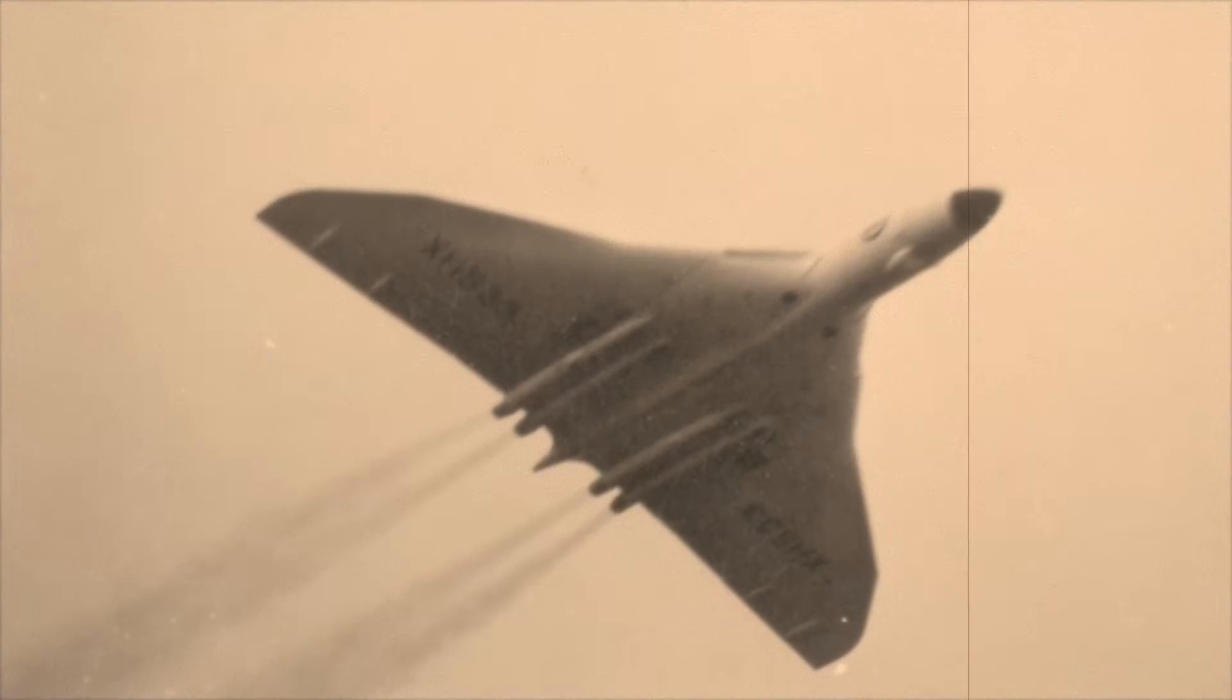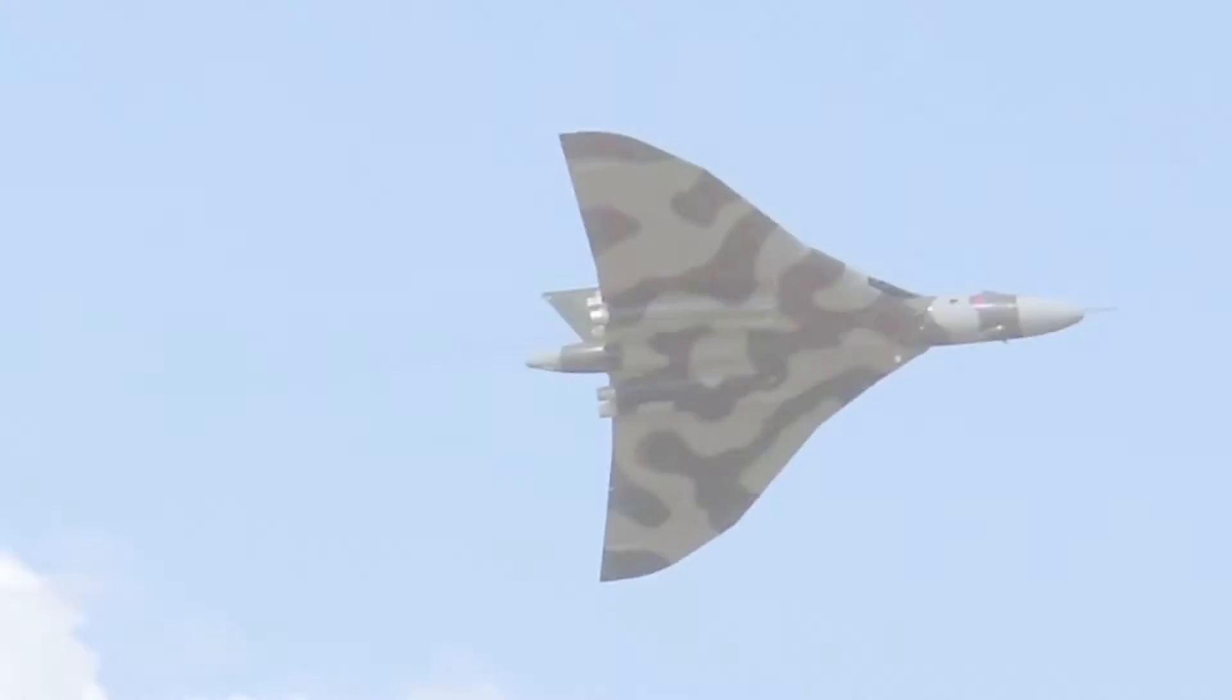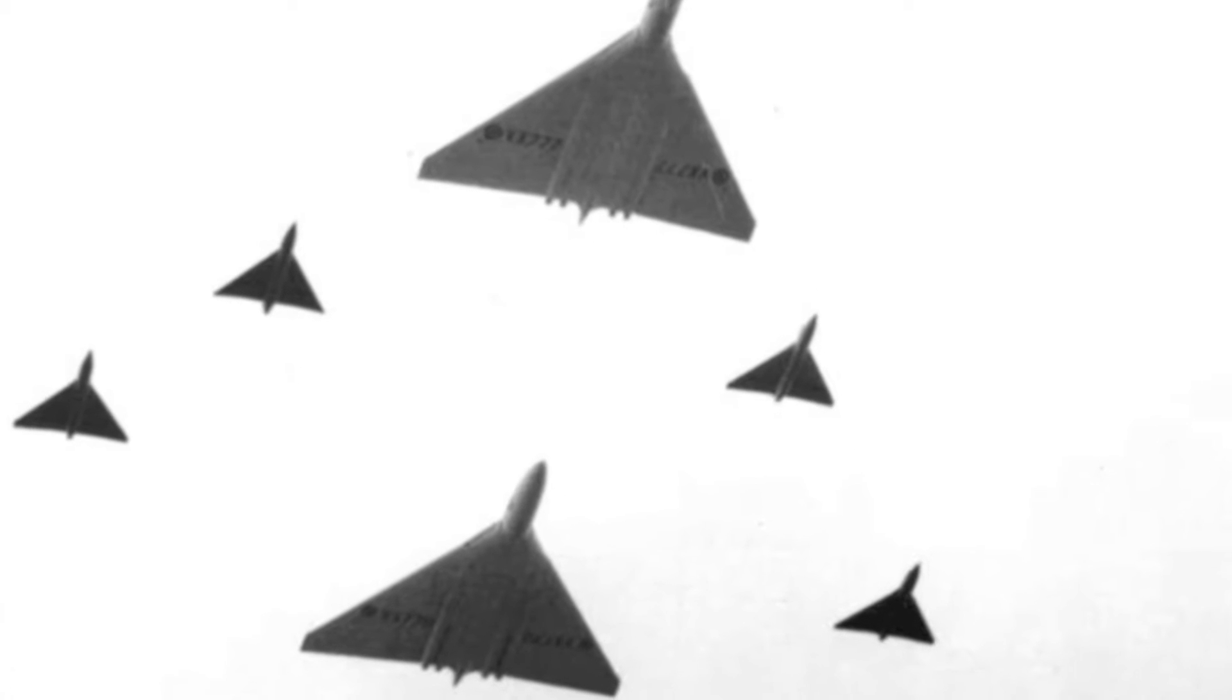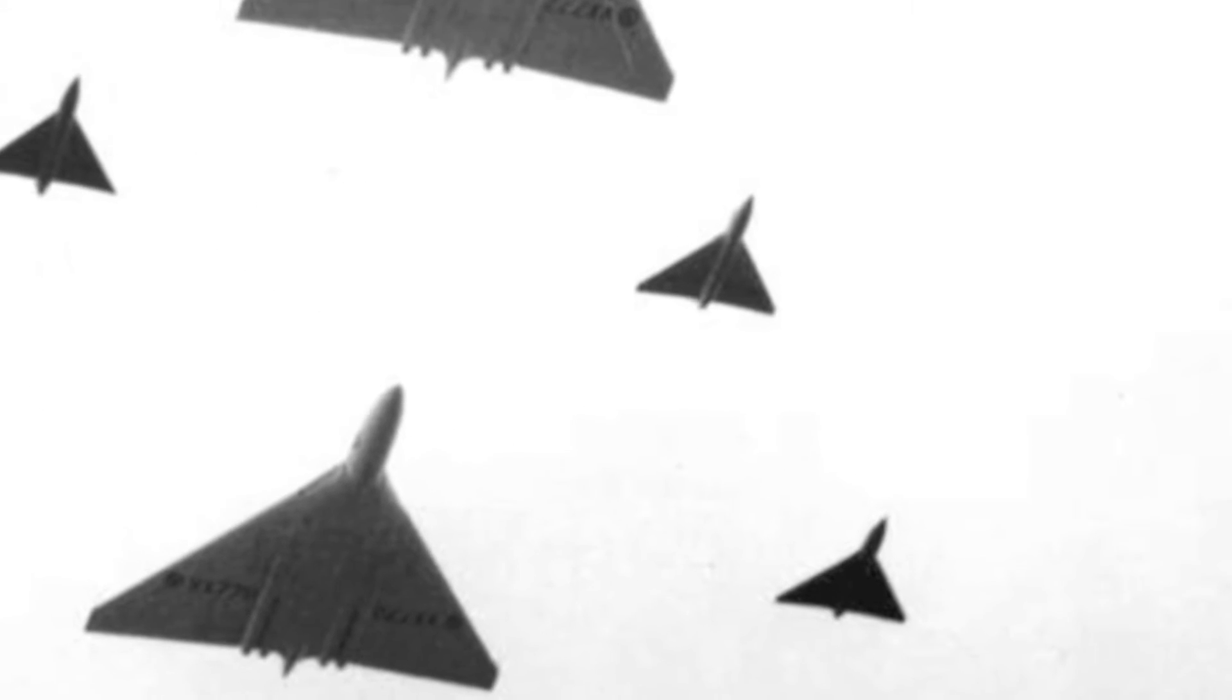The distinct shape of the Vulcan bomber, once the backbone of Britain's airborne nuclear deterrent, yet it began as a one-third scale aircraft. The Avro 707, built to test and refine the delta wing concept.